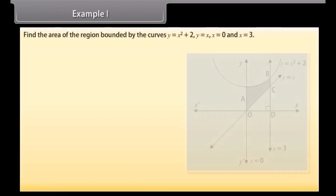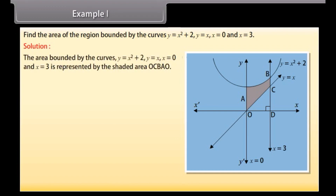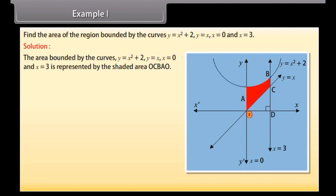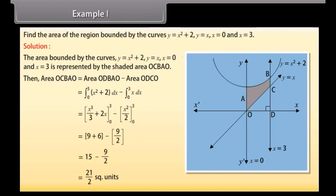Example 1: Find the area of the region bound by the curves y = x² + 2, y = x, x = 0, and x = 3. The area bound by these curves is represented by the shaded area OCBAO. Area of OCBAO = area of ODBAO minus area of ODCO = ∫ from 0 to 3 of (x² + 2) dx minus ∫ from 0 to 3 of x dx. By solving, we get 21/2 square units.